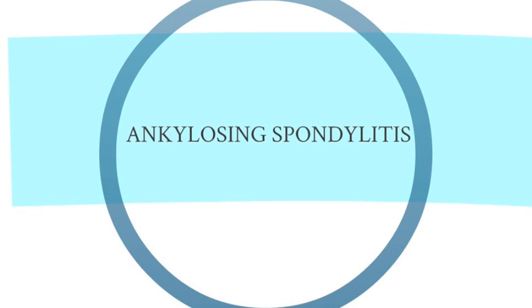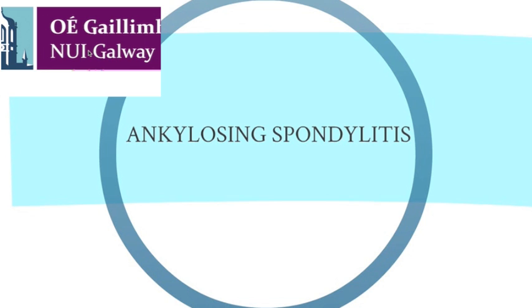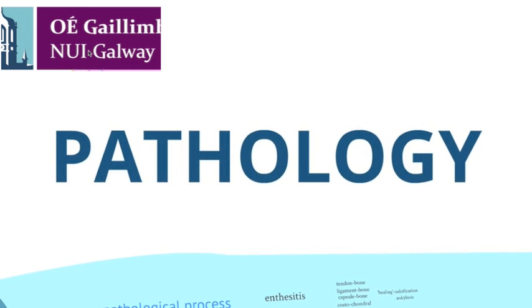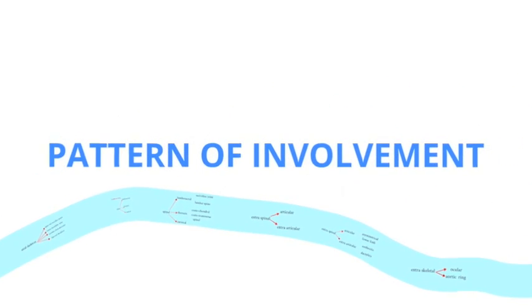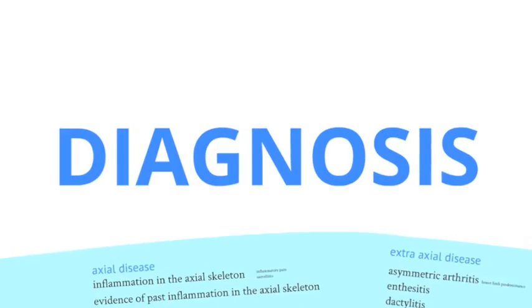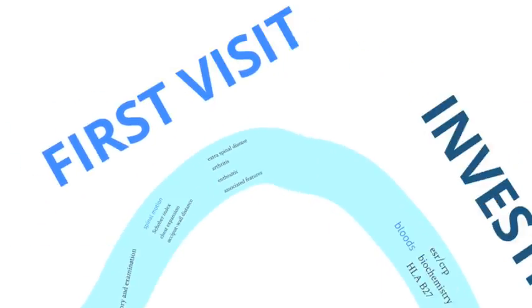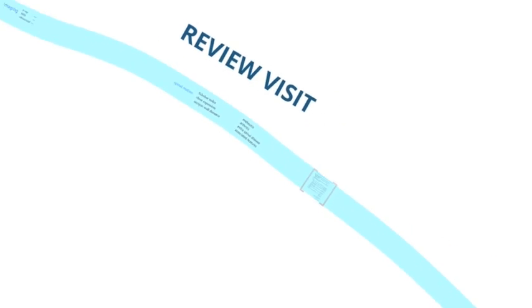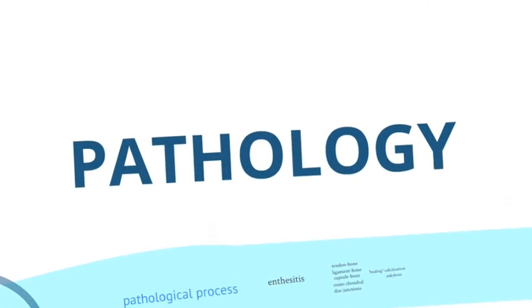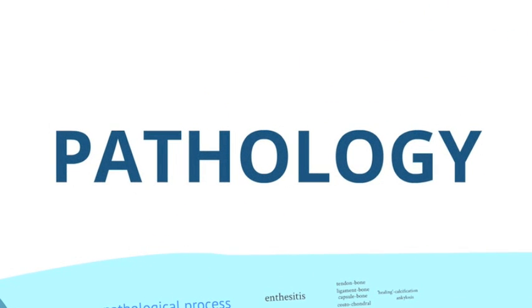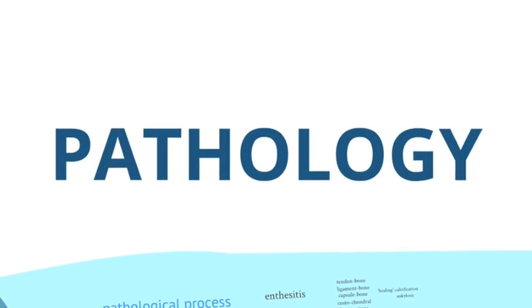This presentation concerns ankylosing spondylitis, a disease of the spine understood by the term spondylitis and resulting in ankylosis of the involved segments. We'll look at the pathology, pattern of involvement, symptoms, diagnosis, treatment, first visit investigations, and review visit. I'm going to do these all hoping that understanding the pathology leads to an understanding of all the other features.